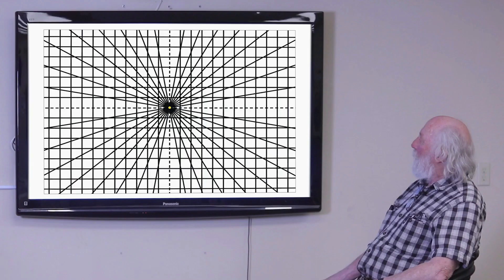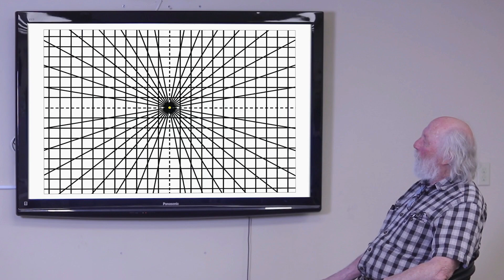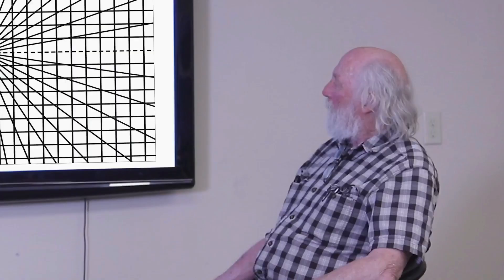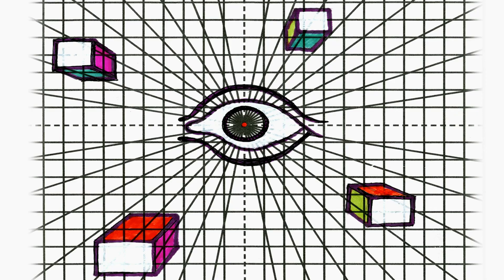This is a grid for one point perspective. The lines just show you the direction that your drawing can go. So if you think about where the vanishing points are, wherever your eye is located, the cubes that you see around you would show up in a different way.